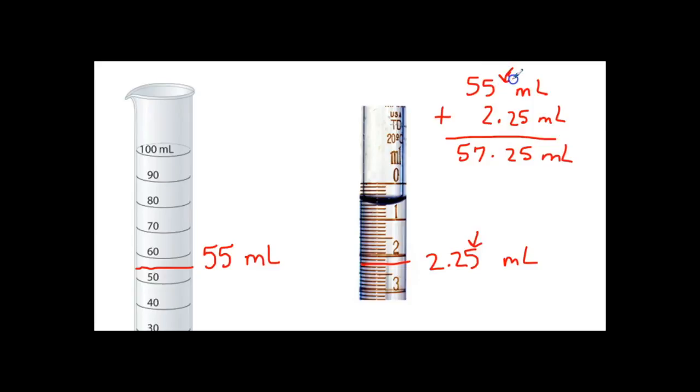It makes sense that you would not include these last two digits in your answer. The correct measurement to record is 57 milliliters because the rules say your measurement can be no more precise than your least precise instrument. Our least precise instrument was the graduated cylinder to the left here.